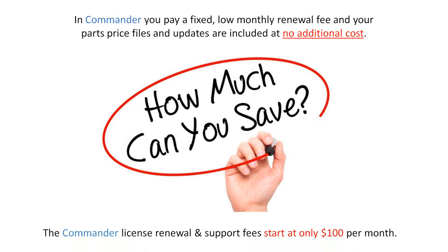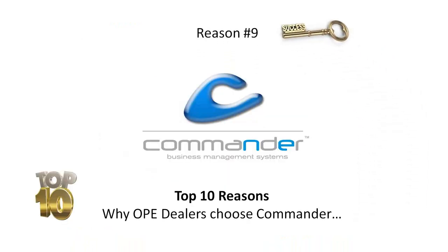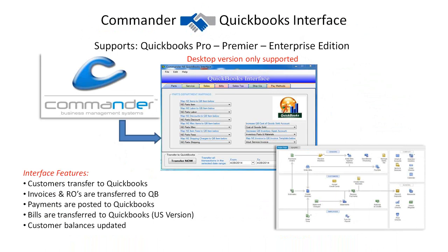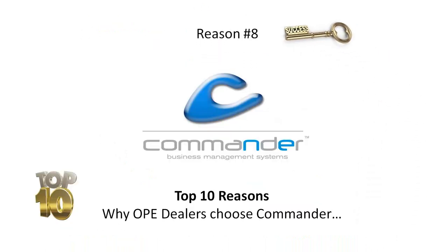To get pricing out of the way upfront: Commander ties in with QuickBooks — a very popular feature where all your customer invoices, payments, and bills transfer from Commander into QuickBooks, so you don't have a lot of manual entry into your bookkeeping system. We now include the QuickBooks interface with Commander at no additional cost; it used to be $475. The startup price for Commander is based on the number of physical computers. One computer license is $2,400 and $100 a month.